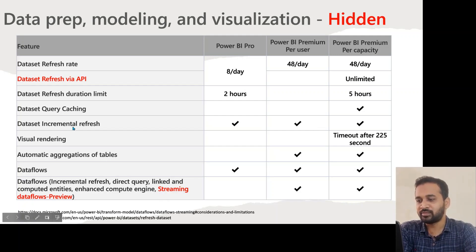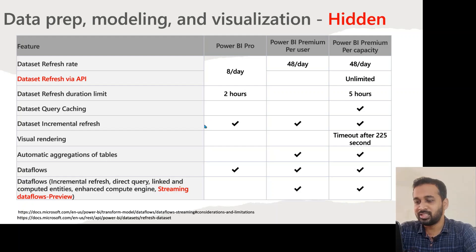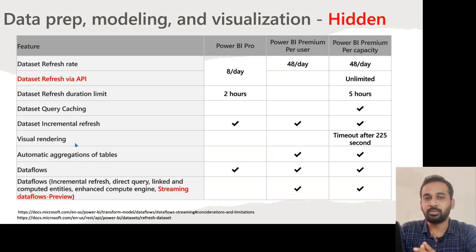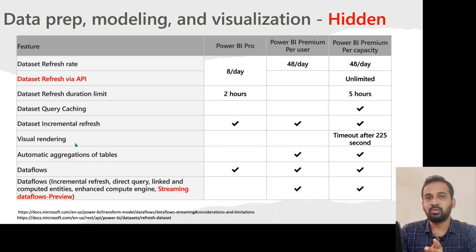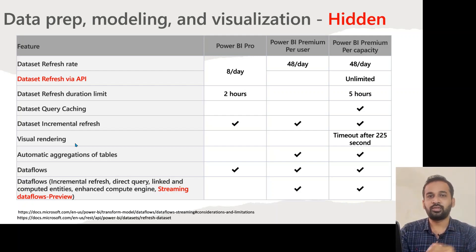Dataset incremental refresh is actually available for all users across all three license types, which is not mentioned in the main documentation but is documented separately. Visual rendering: Power BI Premium Per Capacity recently changed from Gen 1 to Gen 2. In Gen 2, there is a 225-second limitation — if your query runs beyond 225 seconds, that visual will throw an error.